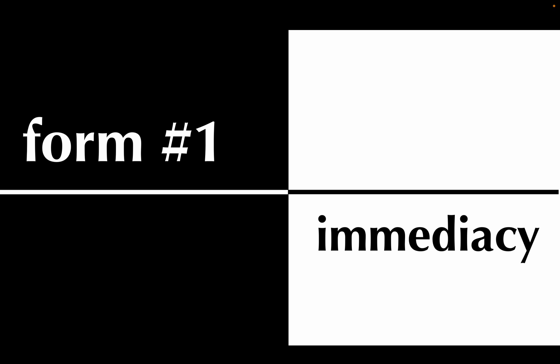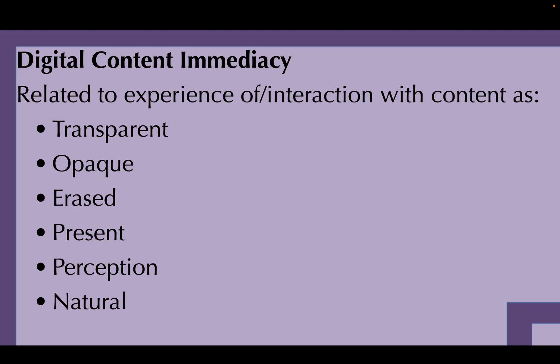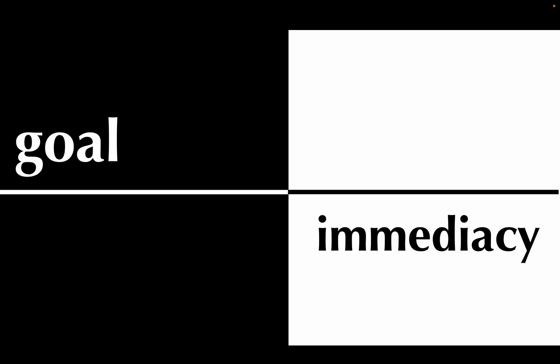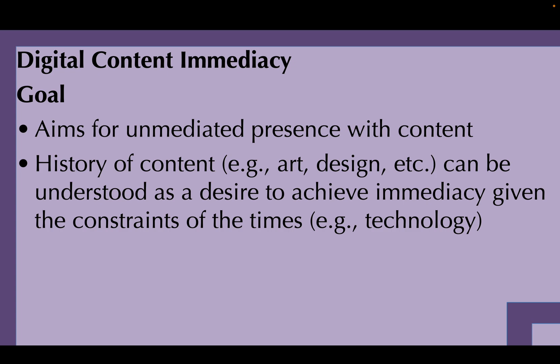The first form of digital content mediation we're going to be talking about is immediacy. What is it? What are some of the ideas behind it? Digital content immediacy is related to the experience of an interaction with content as transparent, opaque, erased, and present. It involves perception, and it is natural. The main goal is to have an unmediated presence with the content — the separation between you and the content is as minimal as possible.